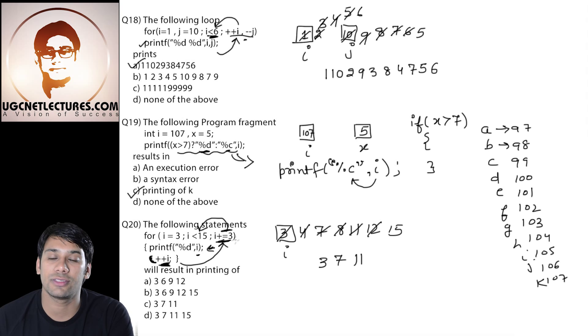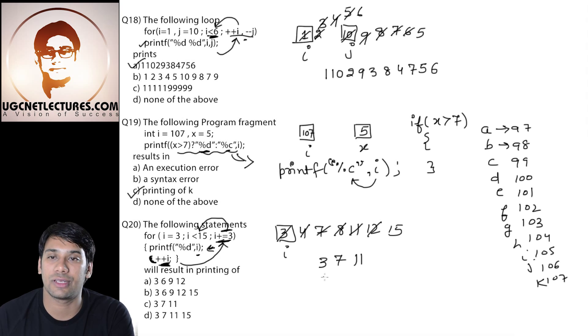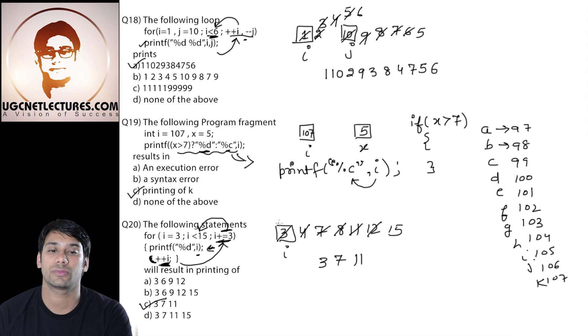Now 15 is not less than 15. Therefore it will come out of this loop. So it will print the output as 3, 7 and 11. Option number C is correct.